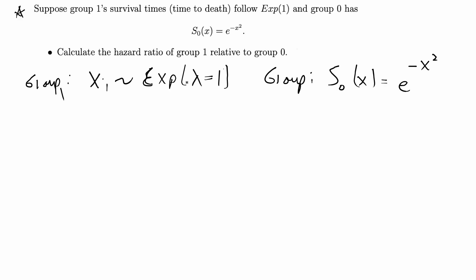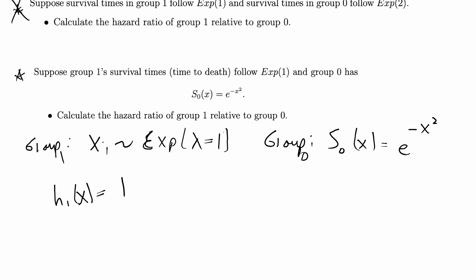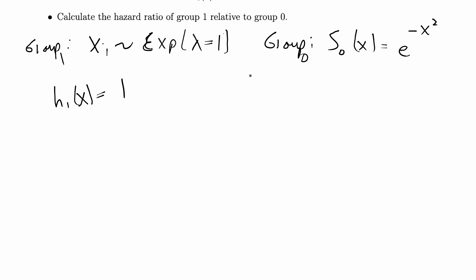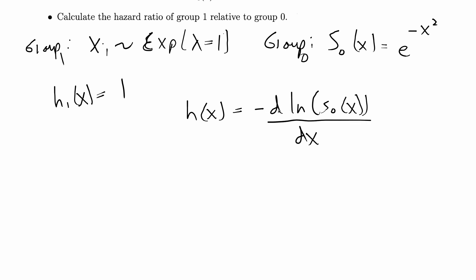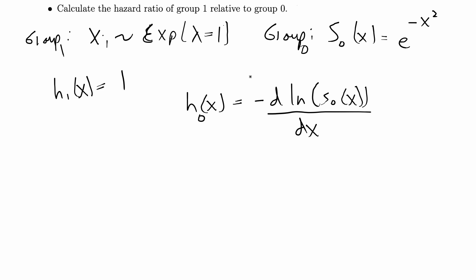For group 1, the hazard function is just equal to 1, the same as in the previous problem. For group 0, we need to calculate the hazard function from the survival function. The formula for doing that is that the hazard function is equal to negative the derivative of the log of the survival function, i.e., negative d/dx of log of S(x).